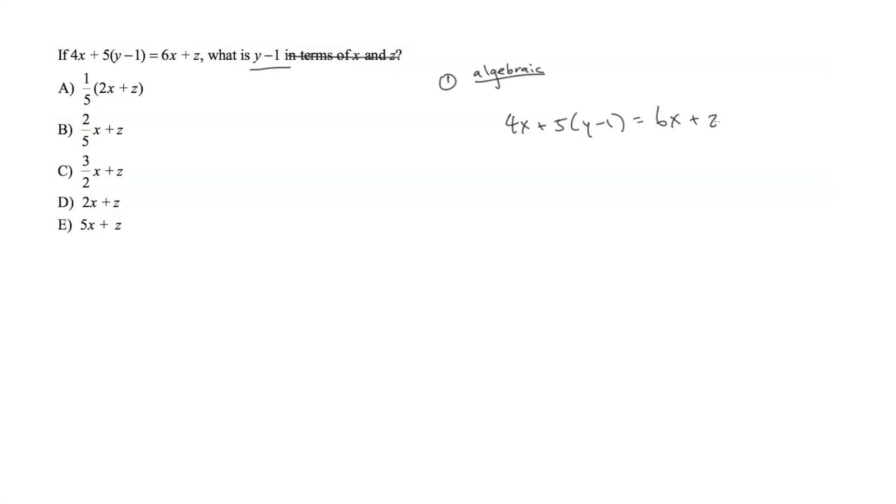Again, I just want to stress the importance of keeping y minus 1 as it is intact. We don't want to distribute this 5, in other words, because then we get 5y minus 5 and then we have to solve everything in terms of y. And then after we get what the y value is, we have to subtract 1 from it at the very end.